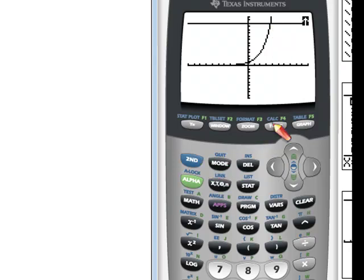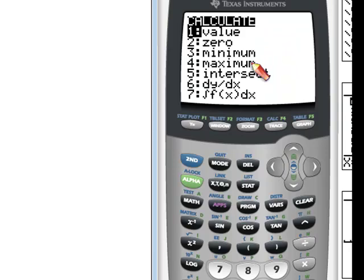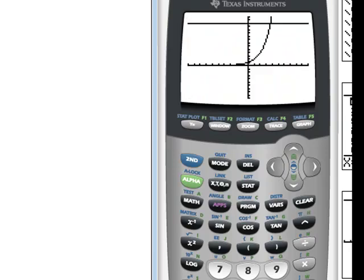So I press 2nd. We're going to calc. What am I looking for? The intersection. Here's my first curve. I press Enter. My second curve is this line here. I press Enter. My guess, I think the intersection is somewhere around here. Press Enter. And it tells me, the intersection occurs at 3.7004397 and y equals 13.